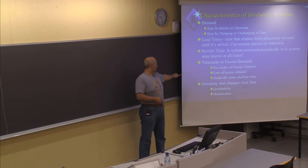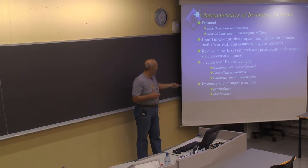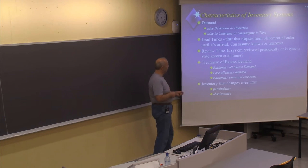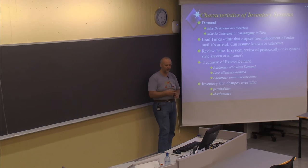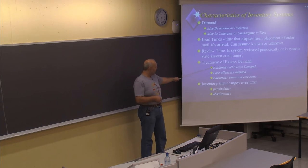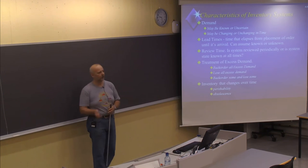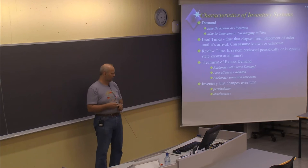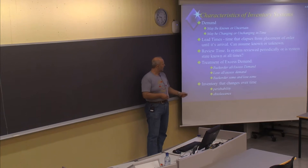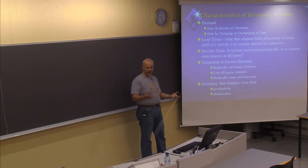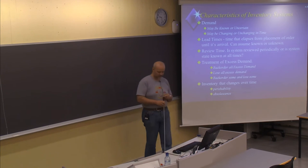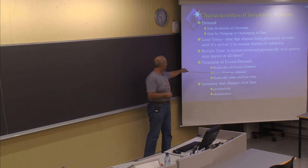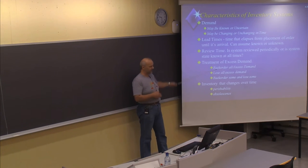We will also talk about the treatment of excess demand, which is more important when we get to stochastic inventory theory, but you should still know about it. What happens if you have more demand than items on stock? Will you have what we call a back order — where you can tell the customer you don't have the item now but they can come back next week when you have a new delivery, and they are satisfied and return? Even so, there are costs related to back orders, even if the customer will come back.